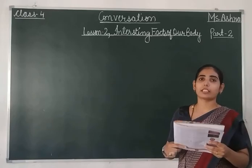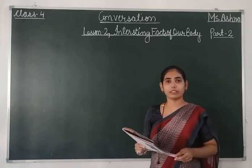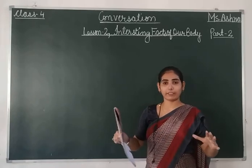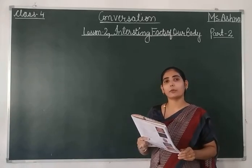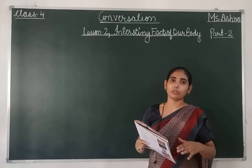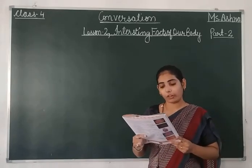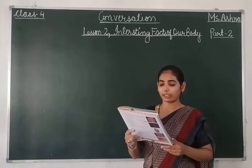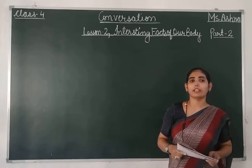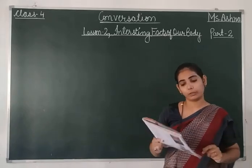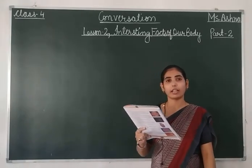Number 4 was: how strong is the thigh bone? Our thigh bone is much stronger than concrete — stronger than cement or a heavy structure. Suppose in an accident the thigh bone may eventually crack. Number 5 was: what are hair and nails made of? Hair and nails are made of a substance called keratin.